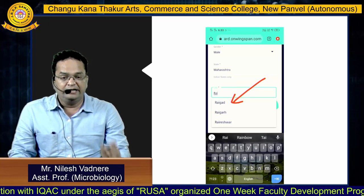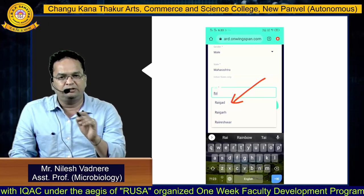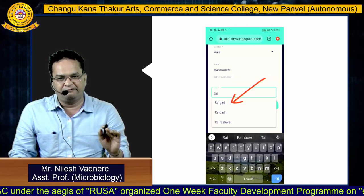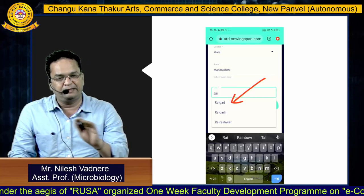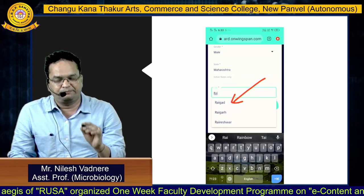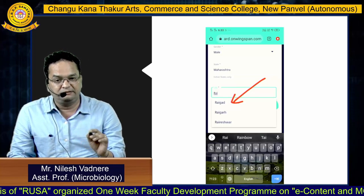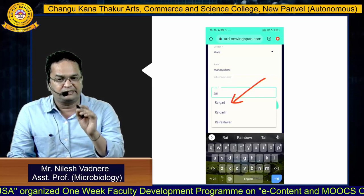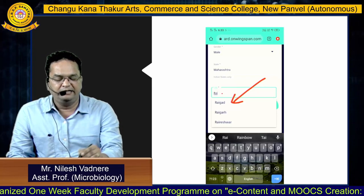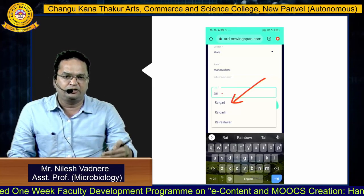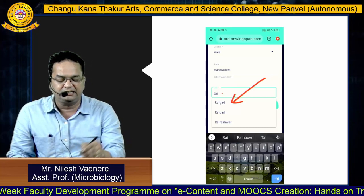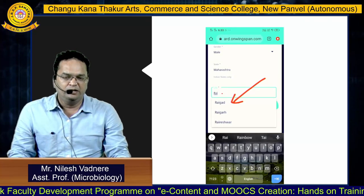For city, don't write New Panvel, Panvel, or Navi Mumbai — write Raigad, which is the name of the district. Type R-A-I and a dropdown list will appear. Select Raigad.